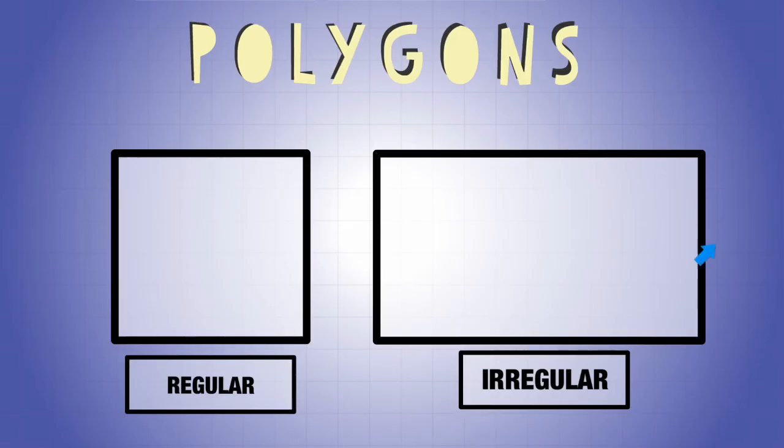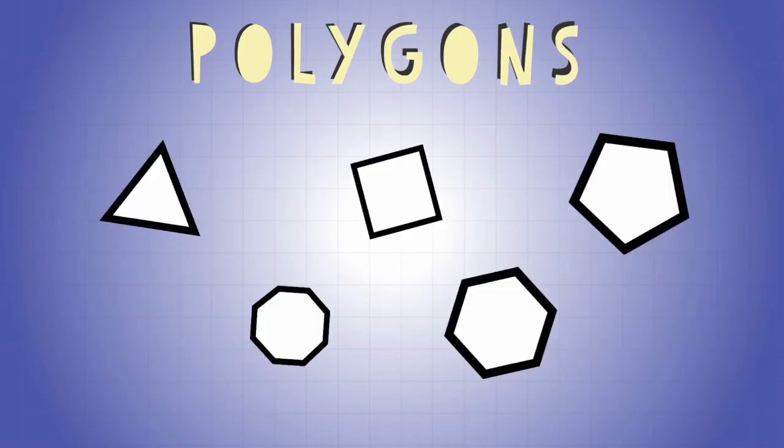...this side and this side aren't the same. This side and this side aren't the same. So not all sides are the same, which means that this is irregular.